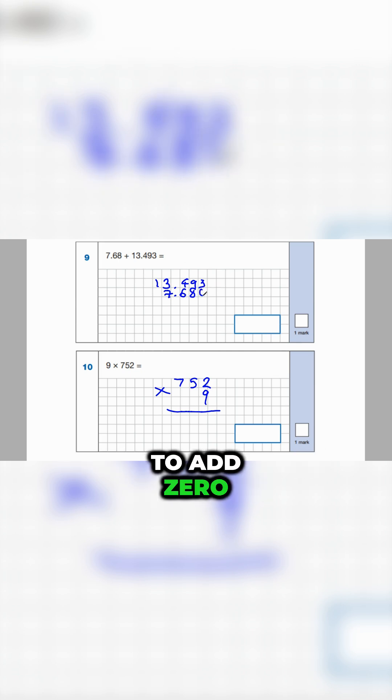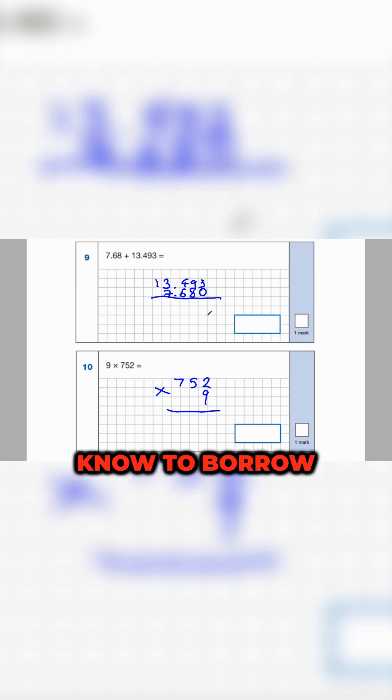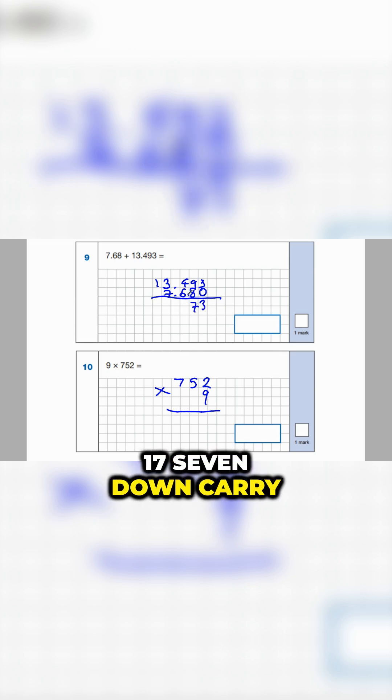So 3 add 0 is 3, 9 add 8 is 17, 7 down carry 1, 4 and 6 is 10 plus 1 is 11, 1 down, and 1 and 1 is 2.